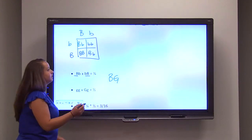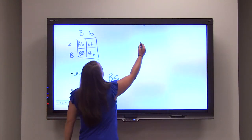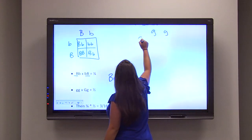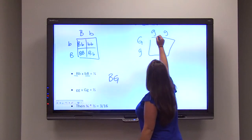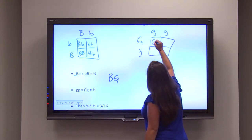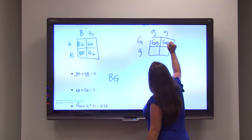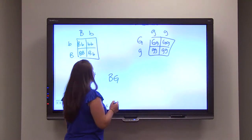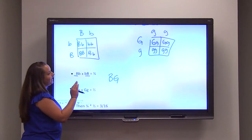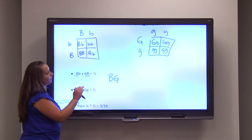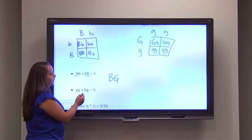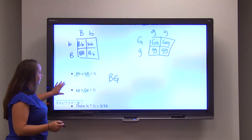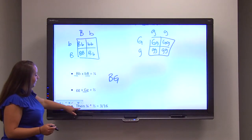Now let's look at the G's. One parent, little g, little g. The other parent, big G, little g. Punnett square once again. When we do this, we only find that one-half of our four has the big G that we're after. So one-half of the offspring. We then take those two probabilities, multiply them together to get 3/16.